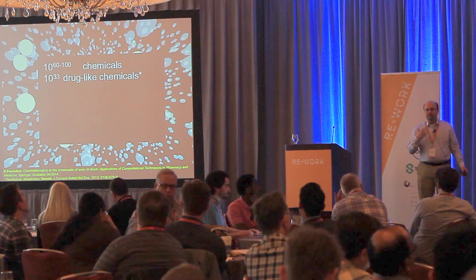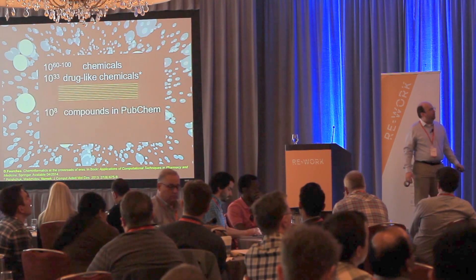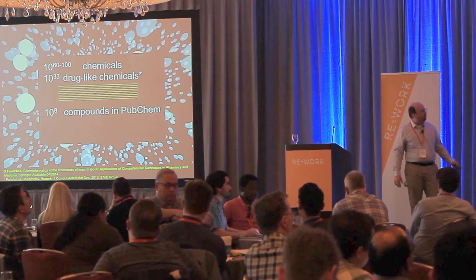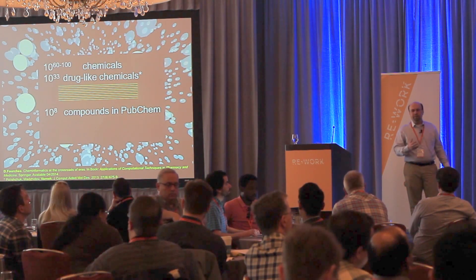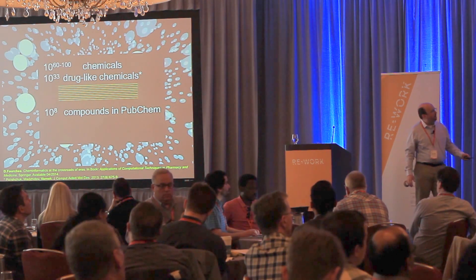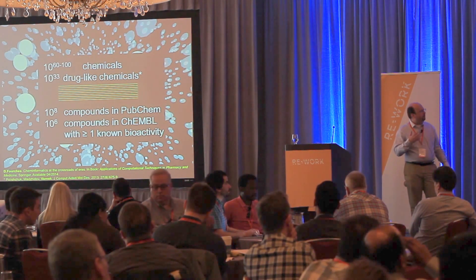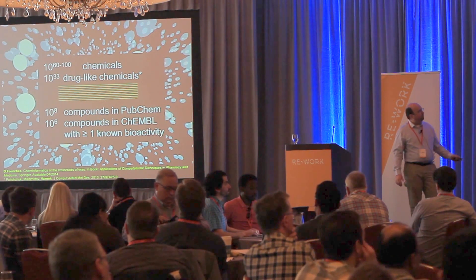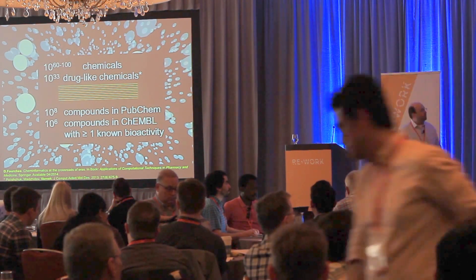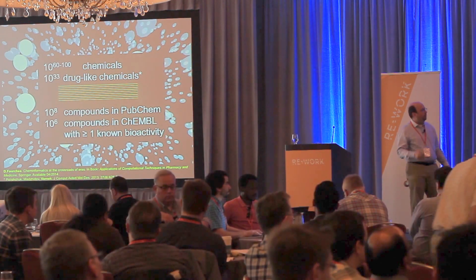To put things into perspective, 10^33 is on the order of magnitude of the number of atoms in the whole galaxy — an amazingly large number. Many many orders of magnitude below that, we have the space of known data. Currently about 100 million molecules have been synthesized and tested — that's 10^8 known molecules — and for about 1 million of them we know at least one biological property or activity. The goal of cheminformatics is to bridge this gap and find efficient ways to look for new molecules.